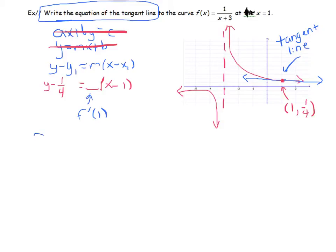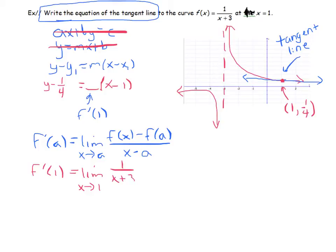We know that the derivative at a point, f prime of a, is equal to the limit as x goes to a of f of x minus f of a over x minus a. And in our case, a is 1. So for us, f prime of 1 is equal to the limit as x goes to 1 of f of x, which is 1 over x plus 3 in our case, minus f of 1. And we can do this in our head, f of 1 is a fourth. Divided by x minus 1.